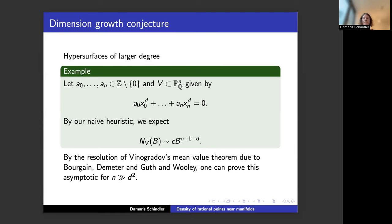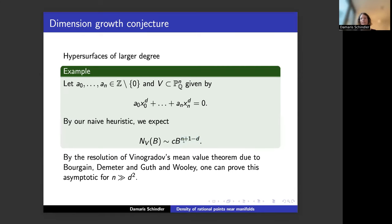This fits Manin's conjecture for rational points on varieties. The exponent n+1−d corresponds to the anti-canonical sheaf: the canonical sheaf of a degree-d hypersurface in P^n is O(−n−1+d), so the anti-canonical sheaf is O(n+1−d). Manin's conjecture relates rational point counts to the anti-canonical embedding, formulated for projective varieties over number fields.